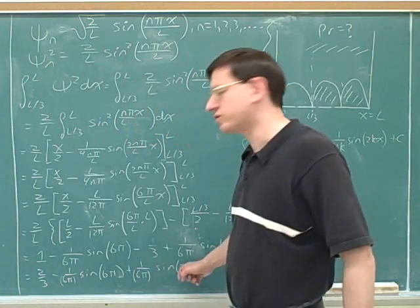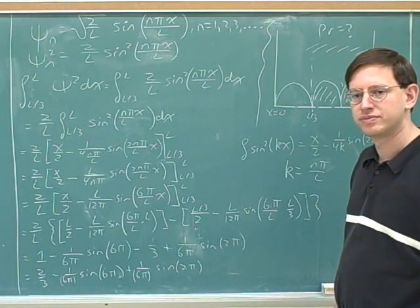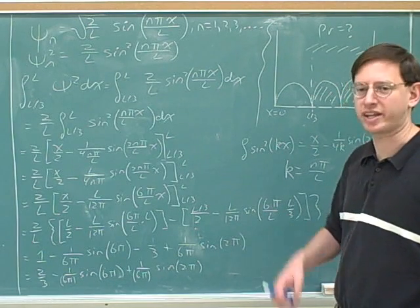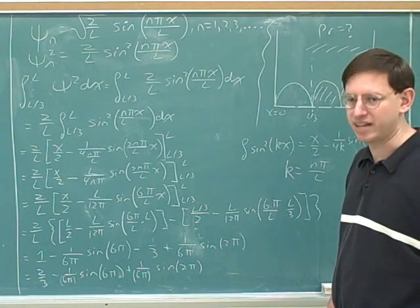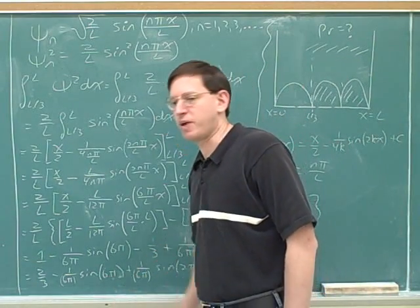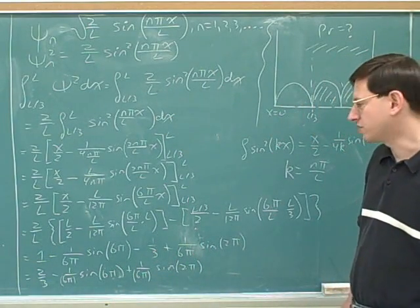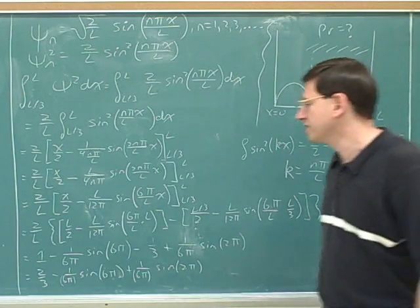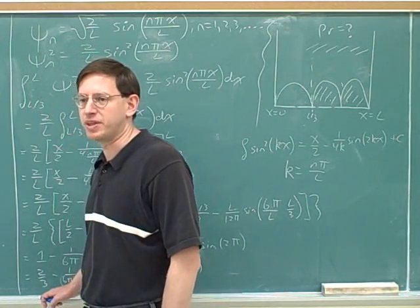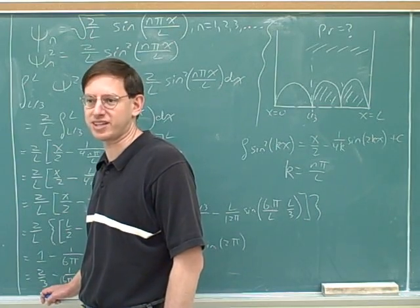Something else we could have done: what's the sine of 2 pi? Zero. And what's the sine of 6 pi? Zero, because that's just three cycles. So what should the answer be? Two thirds. You can see something must have gone wrong, because you got 0.65, but the answer should have been 0.6666...